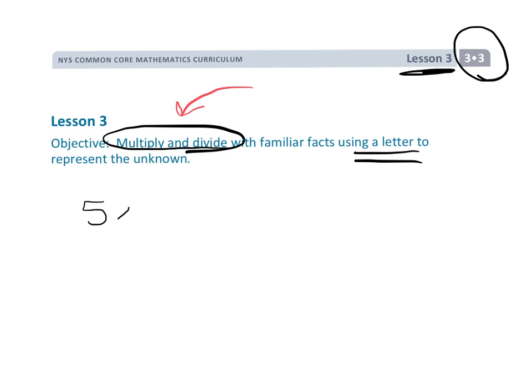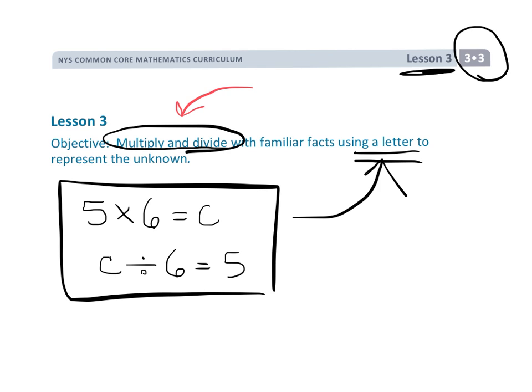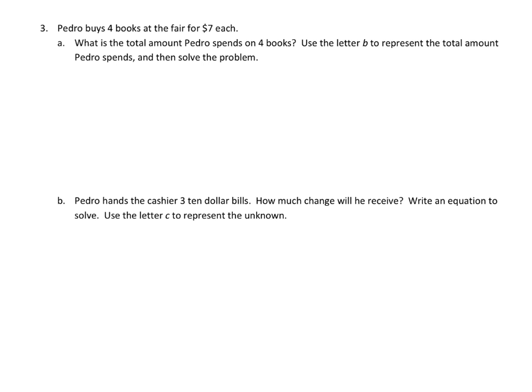So the concept would be like 5 times 6 equals C, which means C divided by 6 equals 5, and that's really about the extent of what we're talking about when we're using a letter to represent the unknown. Now I chose these two problems because they could use the tape diagram, and so I thought that's pretty unfamiliar for a lot of teachers and parents. So let me show you how to draw the tape diagrams.